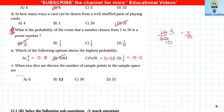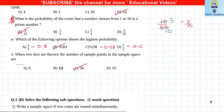When a die is thrown, the number of sample points is 6. When two dice are thrown, the number of sample points is always 36.